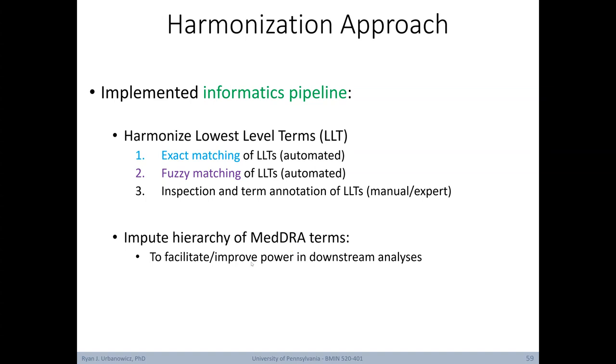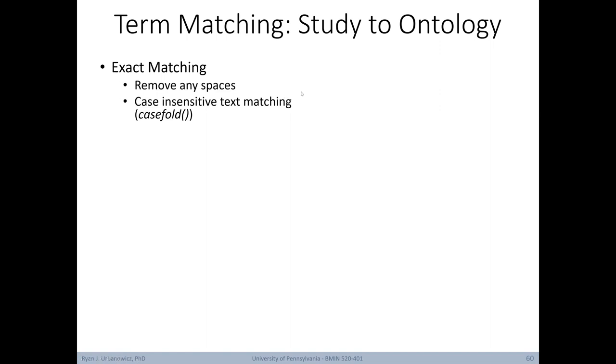After we'd fully mapped these lowest level terms, we then went on to impute the hierarchy of more general MedDRA terms. In other words, for every lowest level term, we wanted to map it to each more general term above it within the MedDRA hierarchy. The main reason for doing this was to try and improve power in downstream analysis. Imagine for a moment that we're only evaluating the lowest level terms and looking at their association with some outcome of interest. There are so many possible unique terms that it's unlikely that we'd have any statistical power to detect an association. However, by analyzing more generalized versions of the terms, we can expect more power to detect associations. Starting with the lowest level terms, we first mapped them to the preferred terms. Then in sequence, we mapped preferred terms to high level terms, high level terms to high level group terms, and finally high level group terms to system organ classes.